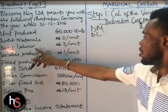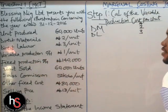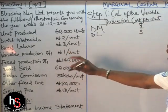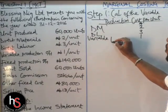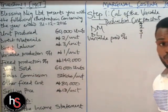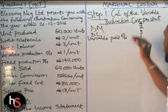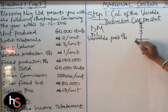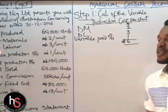For the variable production overhead, since Marginal Costing Technique recognizes all variable costs, we pick this value as well, which is 1 Naira. The fixed production overhead — we don't need it. The unit sold figure and the sales commission are also not needed here. We sum everything up and it gives us 6 Naira as the variable production cost per unit.